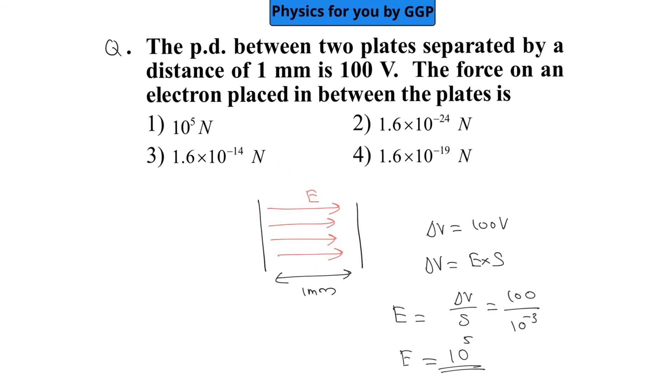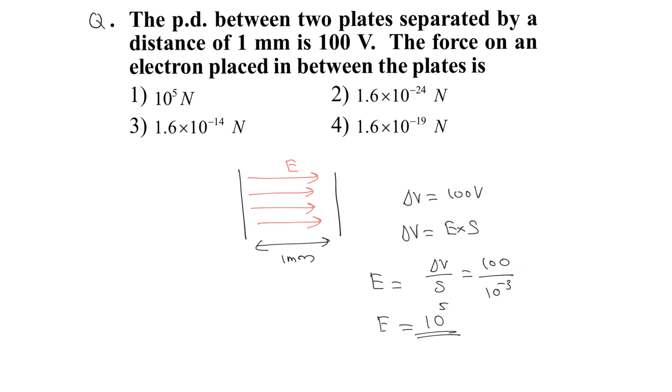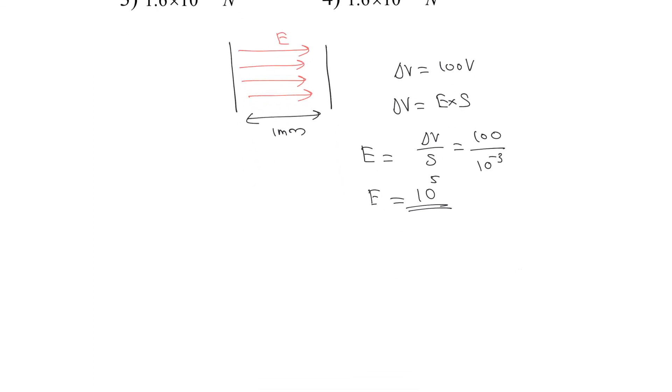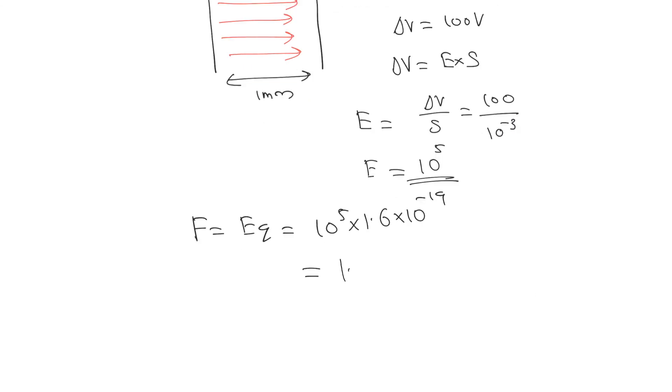Now, our aim is to find out the force on an electron placed between the plates. If you keep a charged particle inside an electric field, the electric field will exert a force of E into Q. E is 10 raise to 5 in this situation and charge of an electron is 1.6 into 10 raise to minus 19 coulombs. So we get the answer as 1.6 into 10 raise to minus 14.